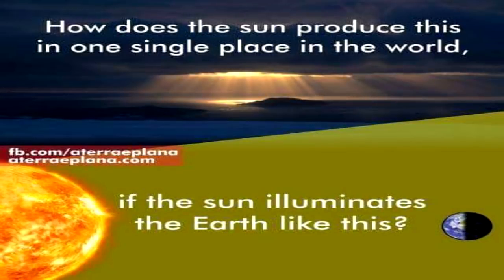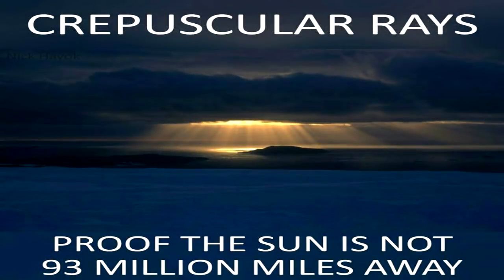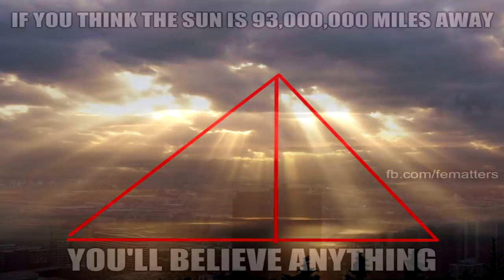Eratosthenes' calculations were made assuming the sun to be millions of miles away so that its rays would fall perfectly parallel, even in points as divergent as Syene and Alexandria. Anyone familiar with the phenomenon known as crepuscular rays, however, knows full well that the sun's rays simply do not fall perfectly parallel, especially at such distant points, rendering the entire argument moot.